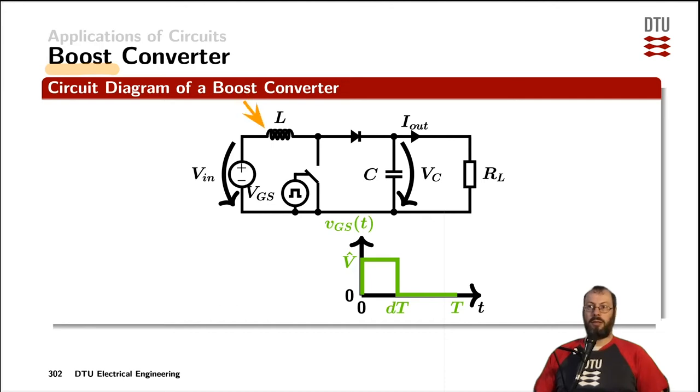The inductor is connected to the input voltage source. The switch is then connected to ground but again controlled from a gate source pulse signal as we can see down here. The shared node between the inductor and the switch is connected through the diode to the output capacitor and the load is modeled by a resistor.